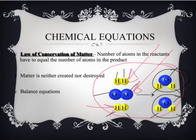The law of conservation of matter states that the number of atoms in the reactants have to equal the number of atoms in the products. Remember, the reactants are on the left-hand side of the arrow, and the products are on the right-hand side. Reactants react to form the final result, which is the product. Matter is neither created nor destroyed. Instead, it's rearranged.